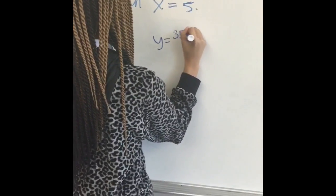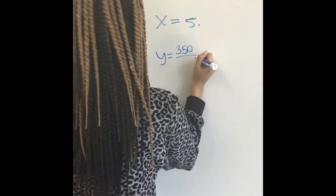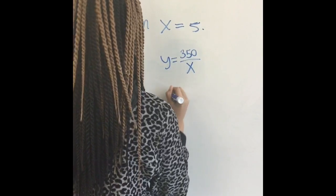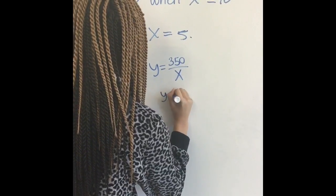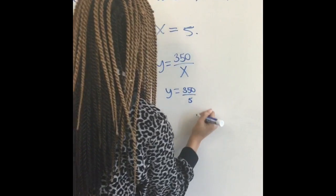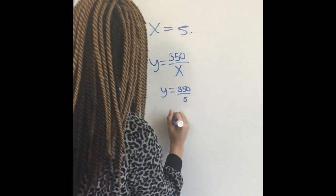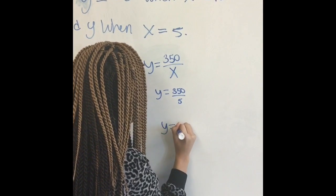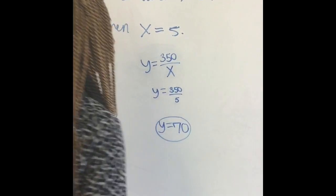Y equals 350 over x. And x is equal to 5. Y equals 350 over 5. And then when you divide 350 into 5, you'll get 70. So y is equal to 70.